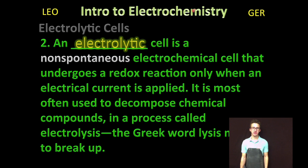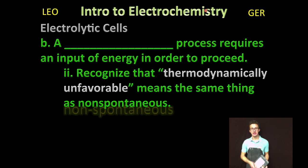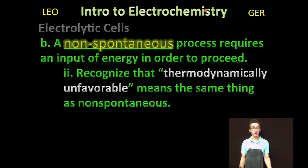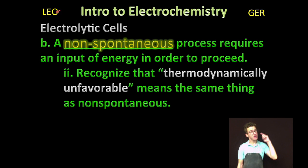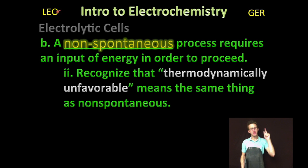The second type of electrochemical cell is an electrolytic cell. This is a non-spontaneous electrochemical cell - a non-spontaneous redox reaction. You can only get this reaction to happen when you apply an electrical current. When we talk non-spontaneous, we're talking about something that's only going to happen when you put some energy in. On the AP Chem test, when we're talking non-spontaneous, you want to write thermodynamically unfavorable - a term we'll talk more about throughout the year.